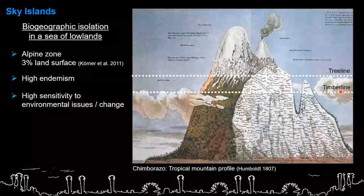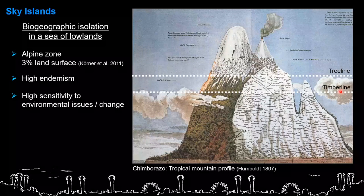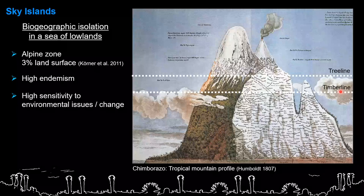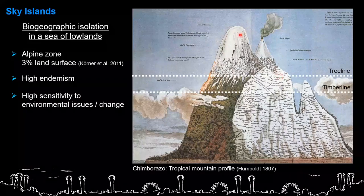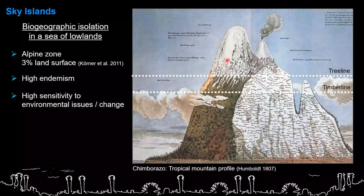In this talk specifically, I'm going to focus on the alpine area of a mountain. We can actually refer to the alpine area as a sky island - an island in the sky, meaning it is an area isolated from the rest. In this case, we would have biogeographic isolation of the mountain tops or alpine areas in a sea of lower elevation ecosystems. Here you can see a profile of Mount Chimborazo in Ecuador drawn by Humboldt, where you do see the alpine area comprised between the tree line and the snow line is actually isolated from the rest.